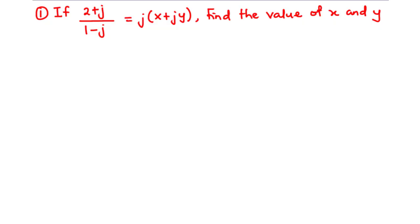In this video we are going to solve questions on equations involving complex numbers. Our first question: if (2 + j) divided by (1 - j) is equal to j times (x + jy), then we are going to find the value of x and y. Here we have a complex number divided by another complex number, equal to the expression on the right hand side.